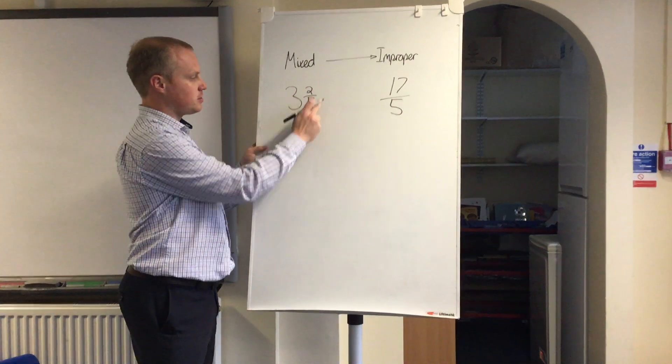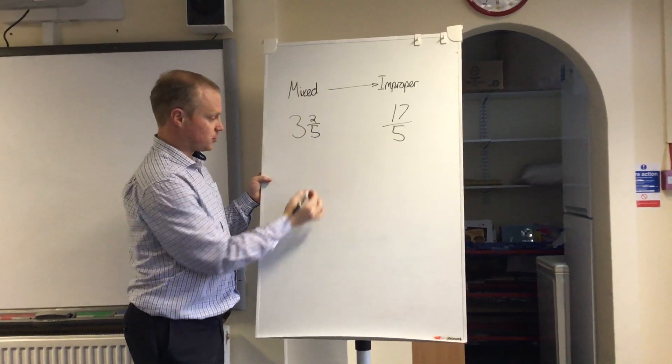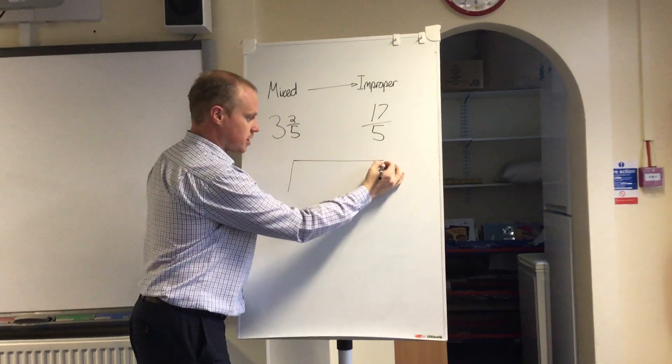I'm going to show you how 3 and 2/5 is equivalent to 17/5 pictorially. I'm going to show you using a bar.